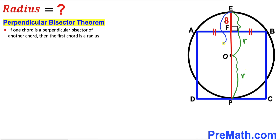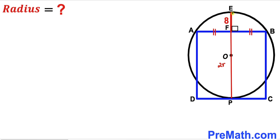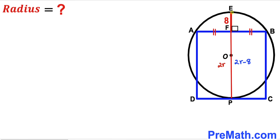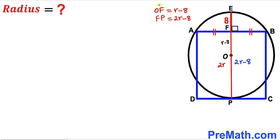This whole diameter EP is going to be 2r. We know segment EF is 8 units, so the remaining segment FP is going to be 2r minus 8. Since O is the center and EF is 8, segment OF is going to be r minus 8.